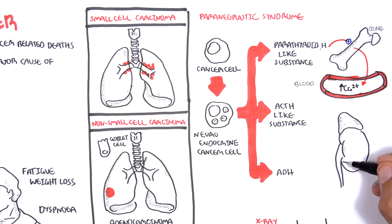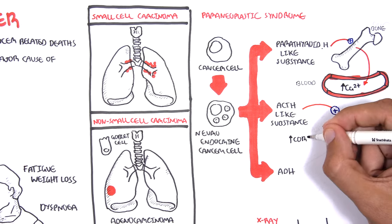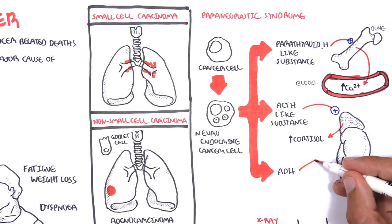ACTH-like substance will stimulate the adrenal glands to produce more cortisol, resulting in stress and increased sympathetic activity.